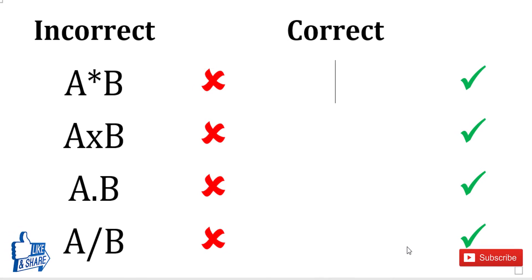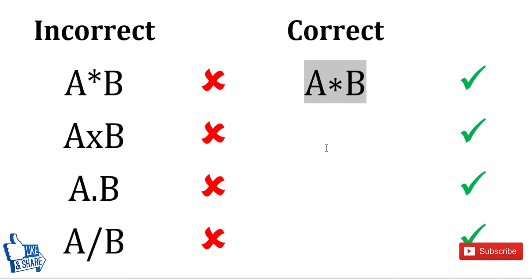The correct way to use the asterisk sign is not by using the asterisk key on your keyboard. To get the correct asterisk sign, the shortcut is backslash-ast and then space. This gives you the correct asterisk.